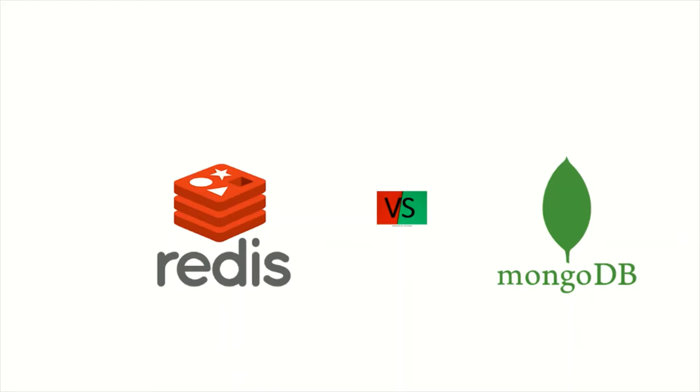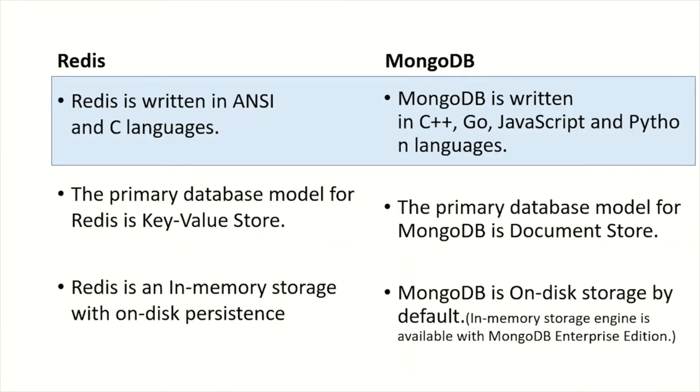Redis is written in ANSI C language, whereas MongoDB is written in C++, Go, JavaScript, and Python languages.